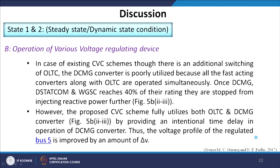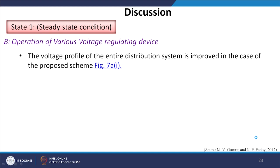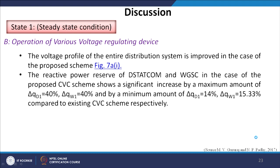The major problem is that they all act simultaneously — the moment they reach 40 percent capability they are no longer allowed to act. However, the proposed CVC scheme fully utilizes both OLTC and DC microgrid converter by providing an intentional time delay in operating the DC microgrid converters. Thus the voltage profile of regulated bus 5 is improved by an amount ΔV. The reactive power reserve of the DSTATCOM and wind generator shows a significant increase by a maximum of ΔQD = 40 percent and ΔQW = 40 percent, and by a minimum of 14 percent and 15.33 percent respectively, compared to the existing CVC schemes.